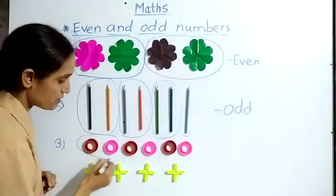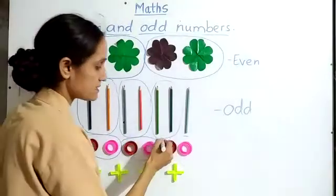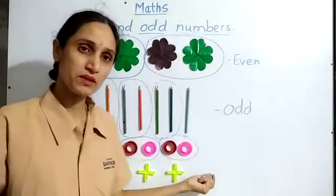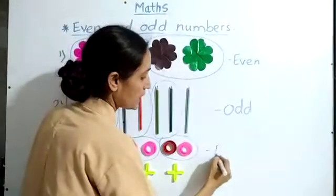Suppose this is your first group. This is second group. And this is third group. Now no ring is remaining. So this is even.